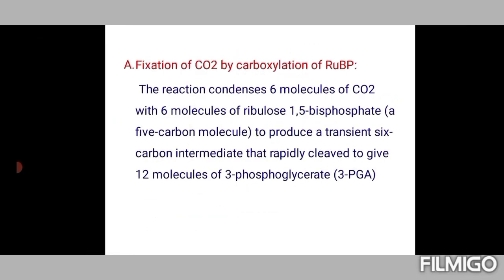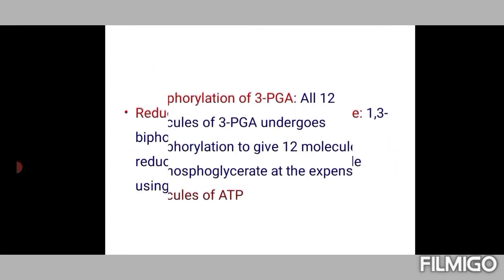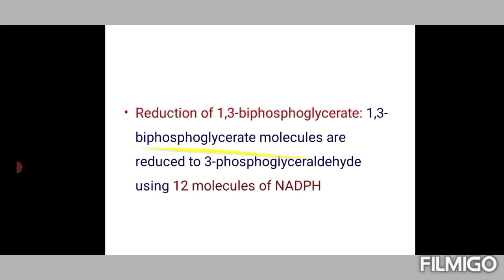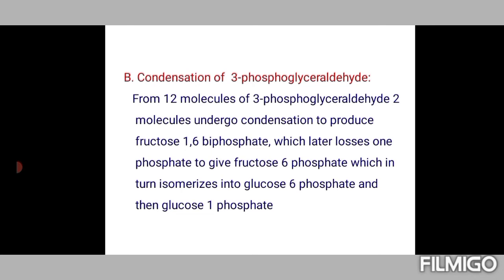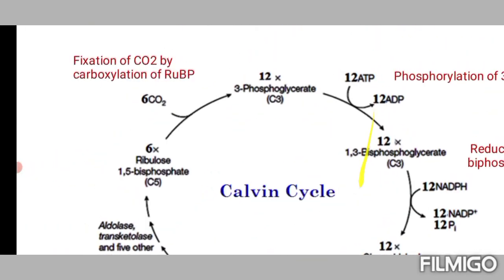To summarize further: fixation of CO₂ by carboxylation of RuBP, phosphorylation of 3-phosphoglycerate, reduction of 1,3-bisphosphoglycerate, condensation of glyceraldehyde 3-phosphate, and finally regeneration of RuBP. The regeneration step also involves additional enzymes including aldolase, transketolase, epimerase, and isomerase, as well as expenditure of ATP molecules.